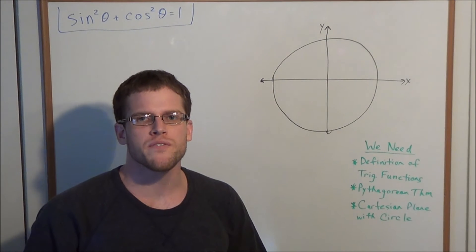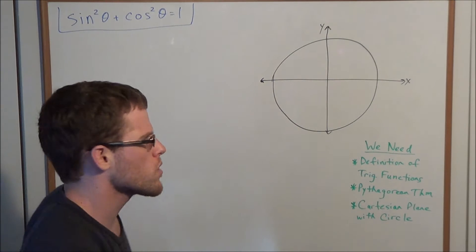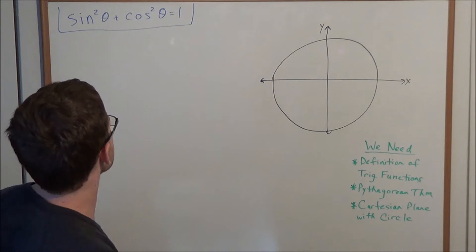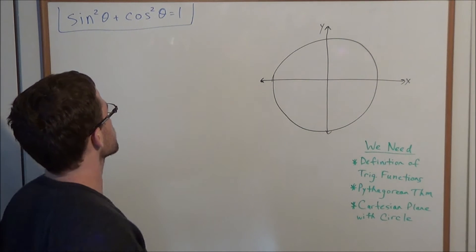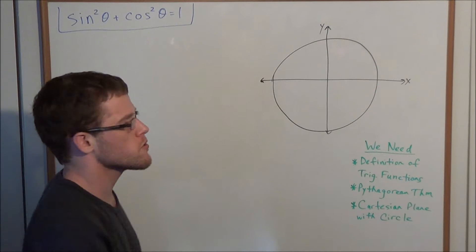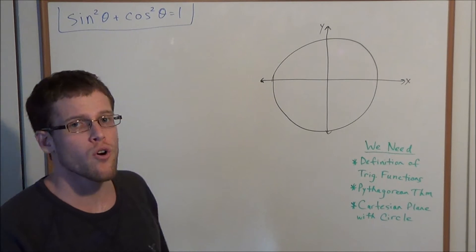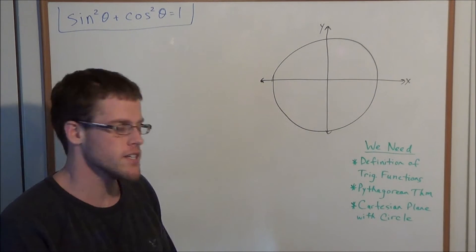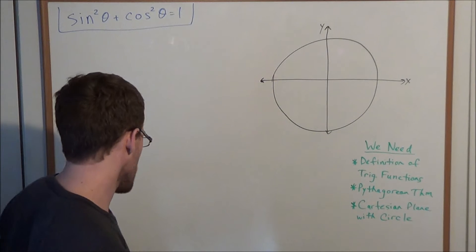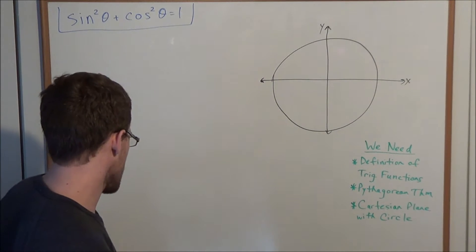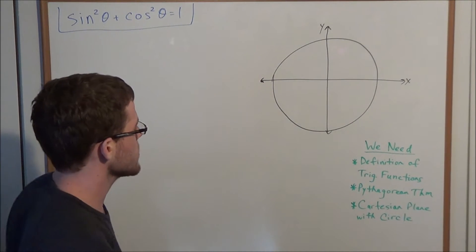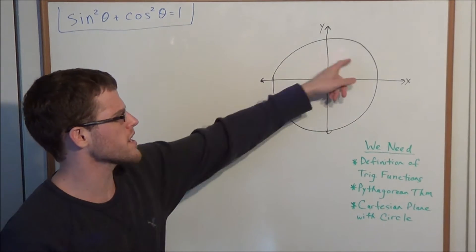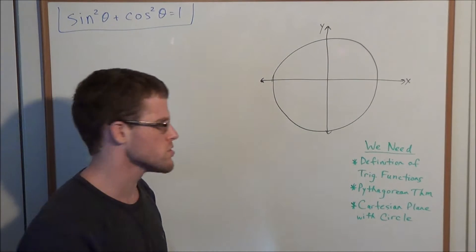Hello YouTube students, my name is Vincent and today I want to take a look at the Pythagorean identity sine squared theta plus cosine squared theta equals 1. The goal is going to be to prove this Pythagorean identity, and to do so let's go ahead and take a look at the Cartesian plane and we'll look at a general circle.